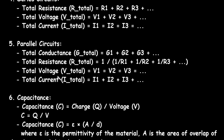Total voltage V total is equal to V1, which is equal to V2, which is equal to V3. So remember that in a parallel circuit, voltage is equal. Total current I total is equal to I1 plus I2 plus I3, and so on.